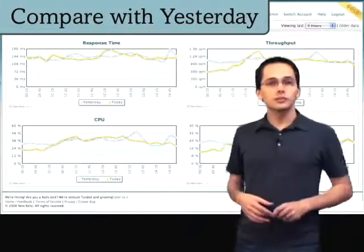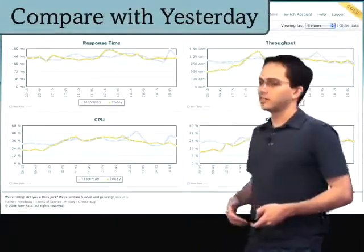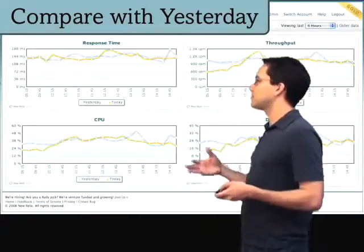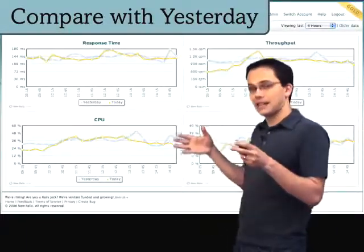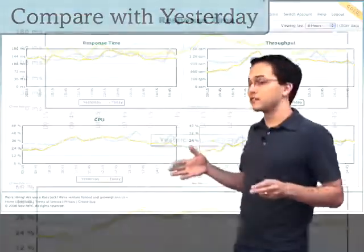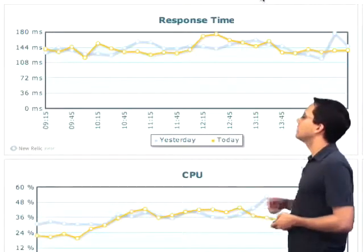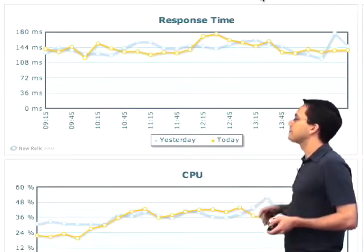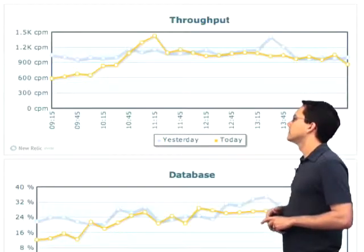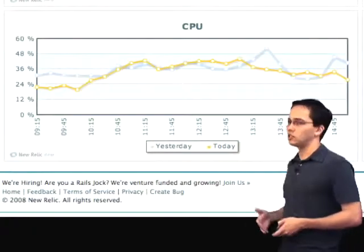The last report in the Bronze tier is the compare with yesterday performance report. As you might imagine, it simply looks at the performance for today's timeframe versus yesterday to see how things compare. Yesterday's data is in blue, today's is in yellow — it looks about the same. You've got throughput, database comparisons, and lastly CPU.